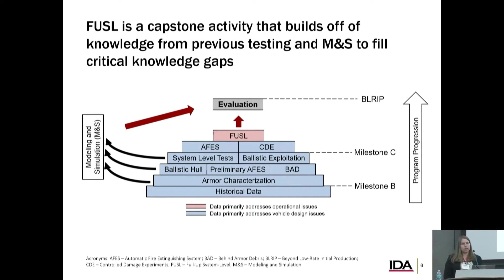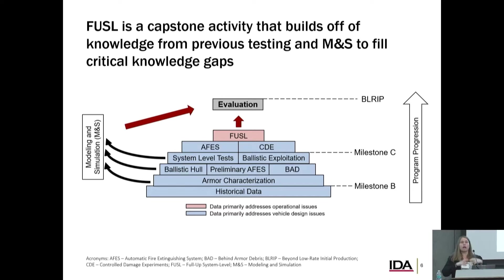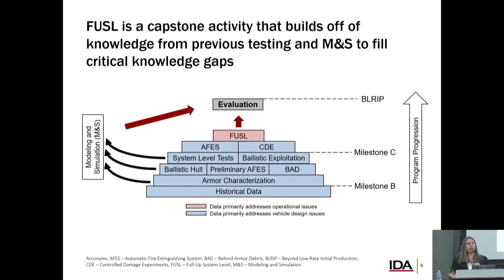FUSIL is essentially a capstone activity — you can think of it as the final exam of a system before it's actually fielded. There's lots of other live fire testing done prior to fielding, shown here in a building block diagram. The blocks at the bottom are usually conducted earlier, with more information available because there's less fidelity, cheaper and easier to conduct. As the program progresses, we get more representative systems that we can test, and therefore test fewer of them. Throughout all of the testing, data feeds modeling and simulation, which supports the evaluation. FUSIL fits in by filling the gaps that all the other testing has not already answered, and should be viewed in context with all of the other testing being planned.